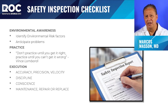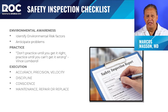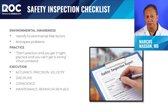When you start a job, an inspection checklist looks at the environment and the individuals involved before they start their work. Environmental awareness identifies risk factors and anticipates problems before they occur. You must know the competence and experience level of each individual you place at a work site so that you don't place an individual at risk. Remember: practice doesn't make perfect — perfect practice makes perfect — but practice till you can't get it wrong.